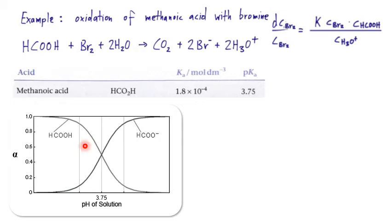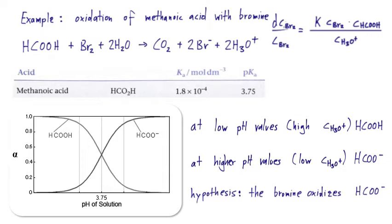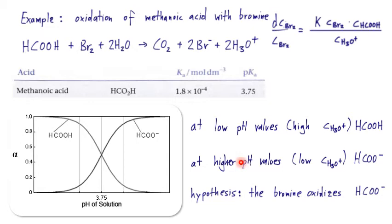Practically, with increasing hydronium ion concentration we have a lower pH, and more methanoic acid will be in its neutral protonated form. At low concentrations of hydronium ions, we have a high pH and predominantly get the negatively charged conjugate base. With this, we can form a hypothesis: if the hydronium ion concentration negatively affects the reaction rate, maybe it is not the neutral methanoic acid that reacts with bromine, but actually the conjugate base. At low hydronium ion concentrations we have a high reaction rate, meaning at high pH values. So the hypothesis is: bromine oxidizes the negatively charged methanoic acid.